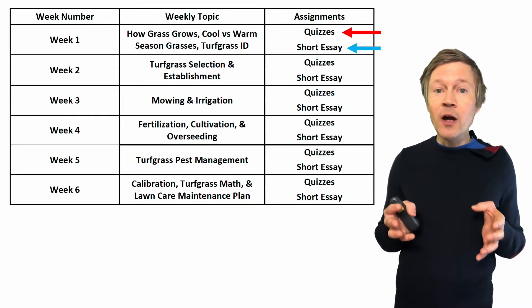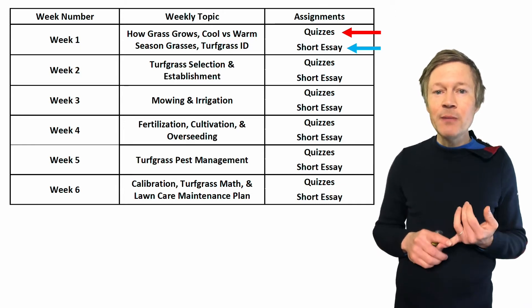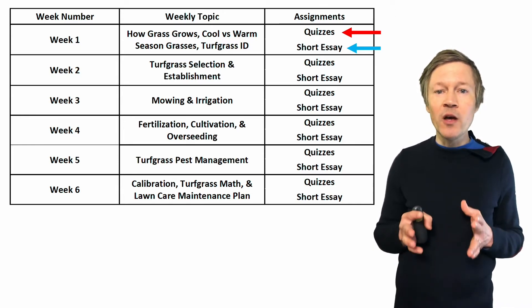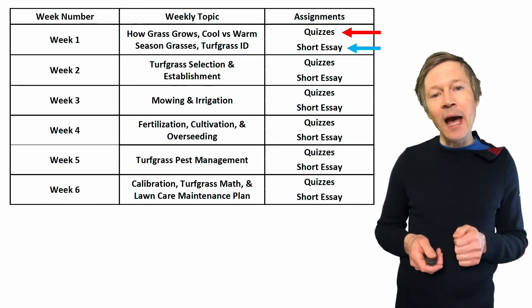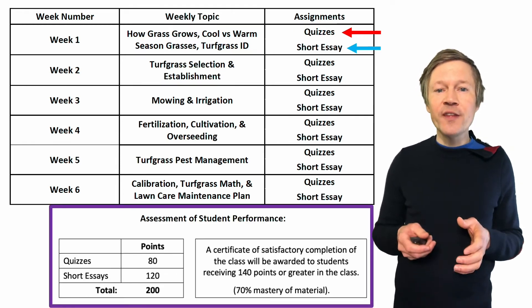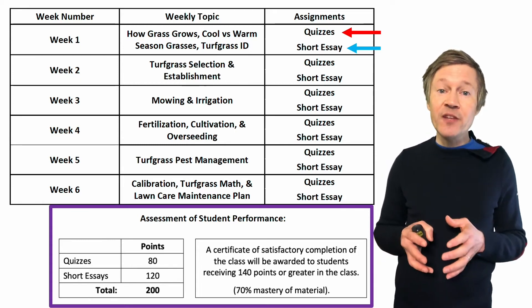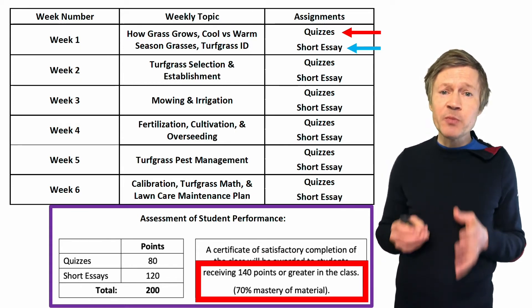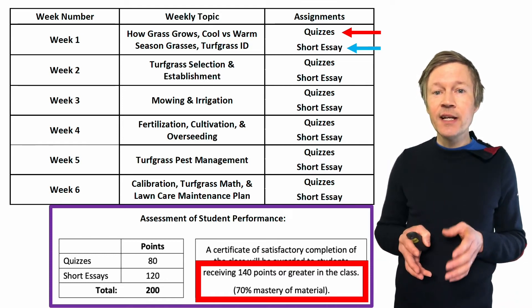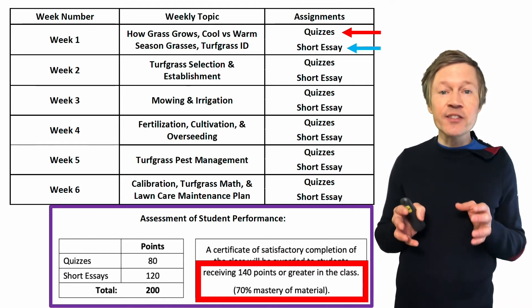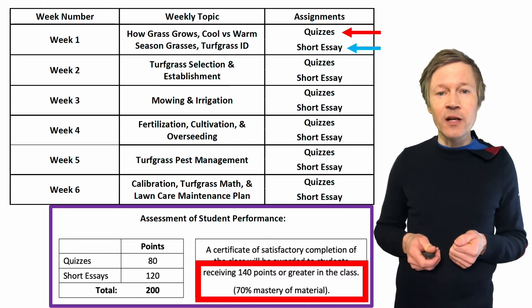In addition, while you are assigned as a student in this class, I'm going to be available to you to either email or we can even set up a one-on-one Zoom call so we can have a conversation about any questions or concerns you may have. If you are able to achieve 70% or more of the 200 points total offered in this class — that's 140 points — you're going to get a certificate of completion, which may be one of your goals for this class.